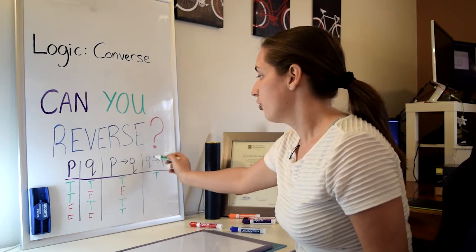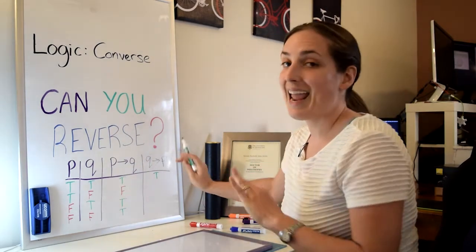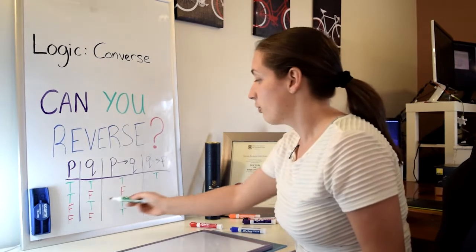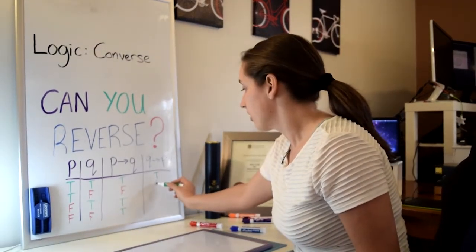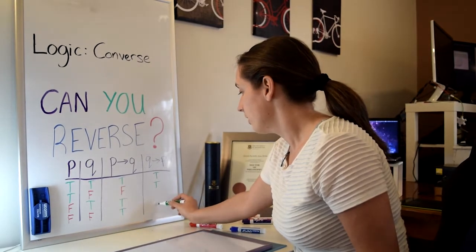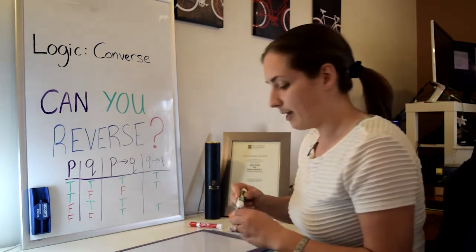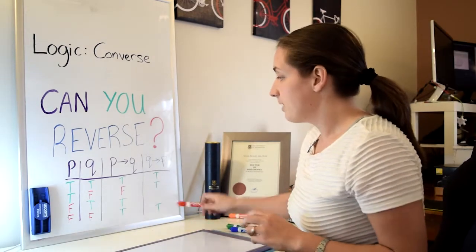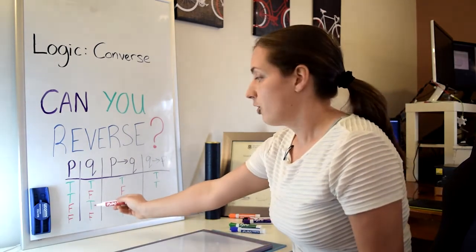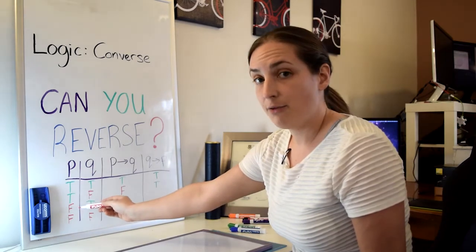Any time that you have Q false and P anything, it'll still be true. So you get a true here and a true here. Now the only time that if Q then P is false is if you have Q true and P false. That's the only time you'll have a false here.